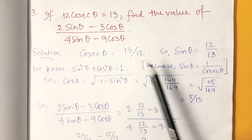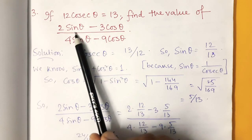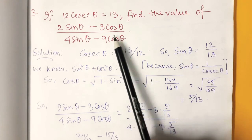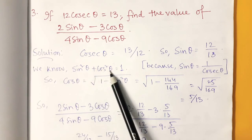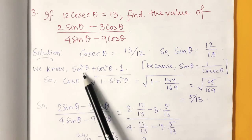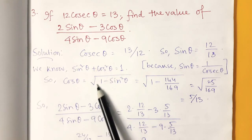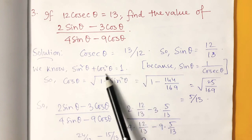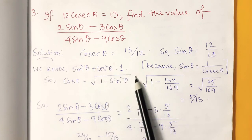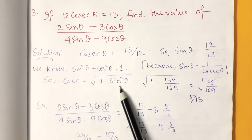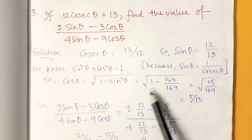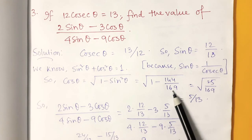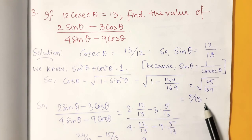Now see this expression — sin θ and cos θ are both present. We already have the value of sin θ, now we need cos θ. For that we use the formula sin²θ + cos²θ = 1. From there, cos θ equals root over (1 − sin²θ). Putting in sin θ = 12 by 13, we get 1 − (144 by 169). After calculation, cos θ comes out to 5 by 13.